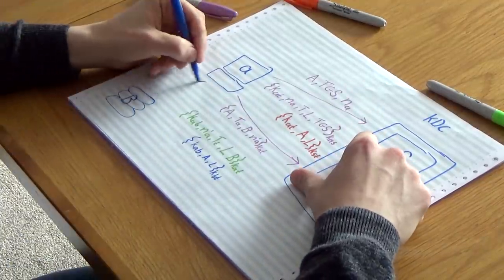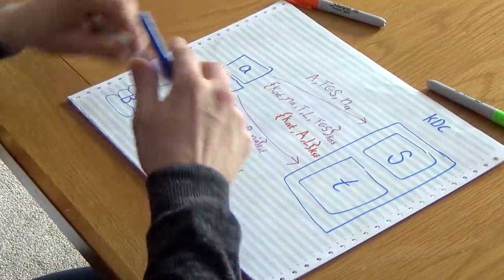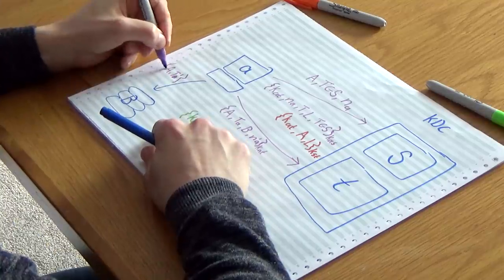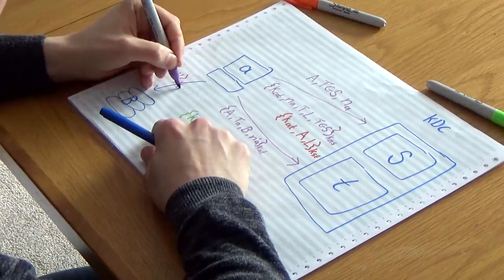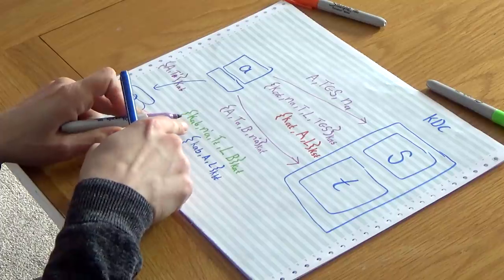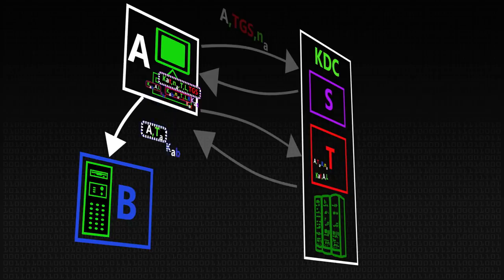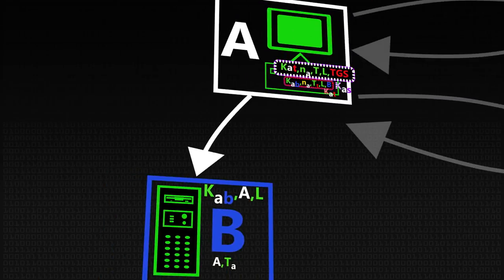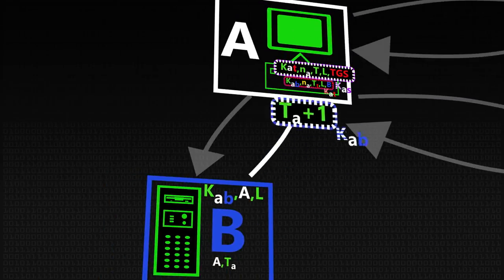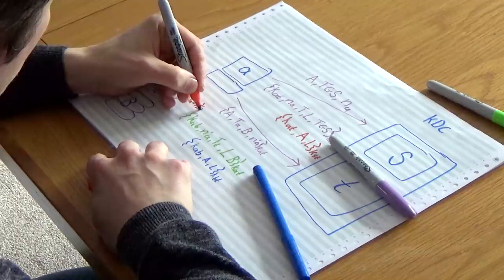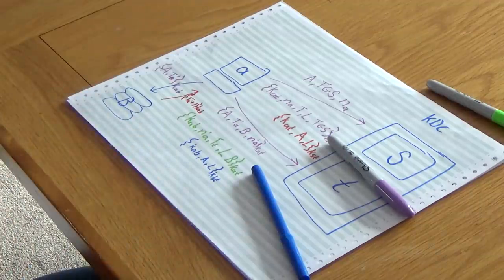So I pass on a ticket, and I also pass on a message that says, very simply, my name is A. This is the current time. And I'm going to encrypt this using KAB, which is the new key I just got given by the ticket-granting server. So I send it that. I also send it the ticket. It decrypts the ticket, looks at KAB, and it can now understand this message. And finally, it responds with my timestamp plus one as a challenge to prove that it can actually understand the message and it's not an imposter.